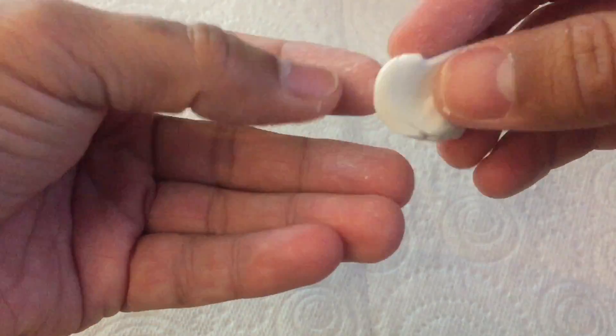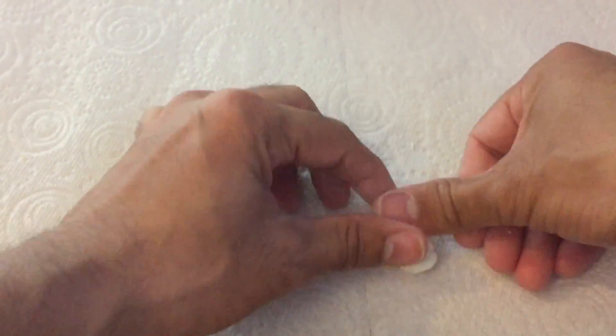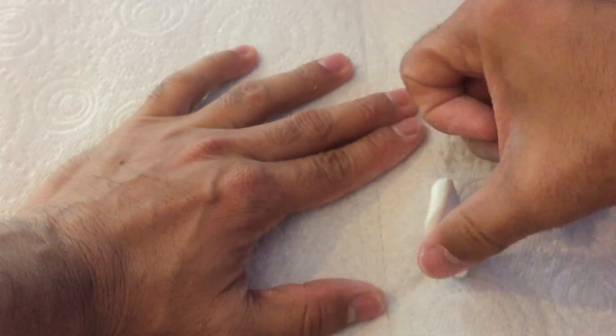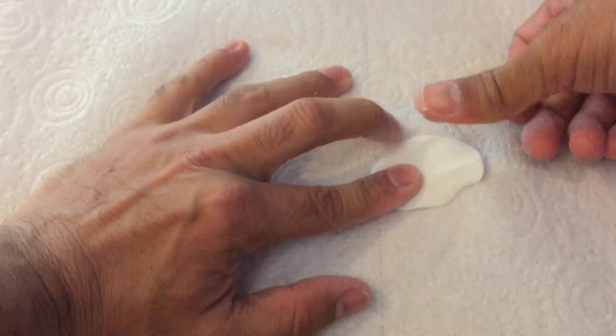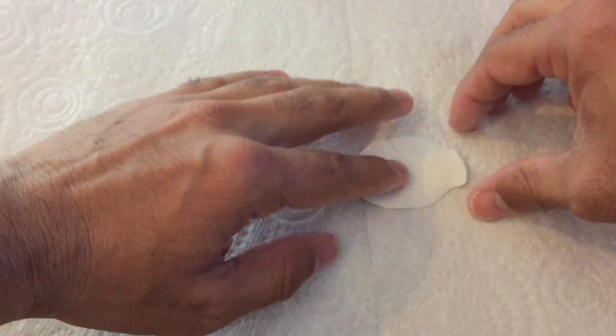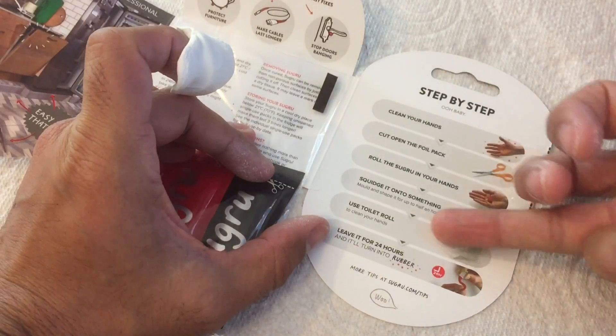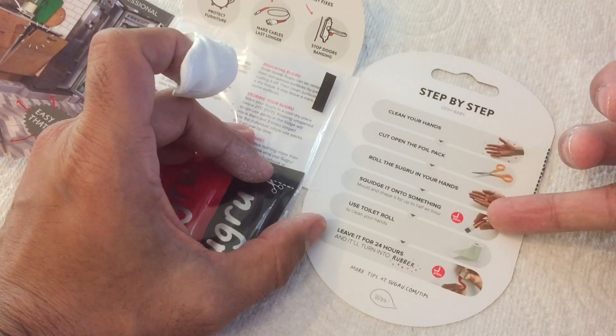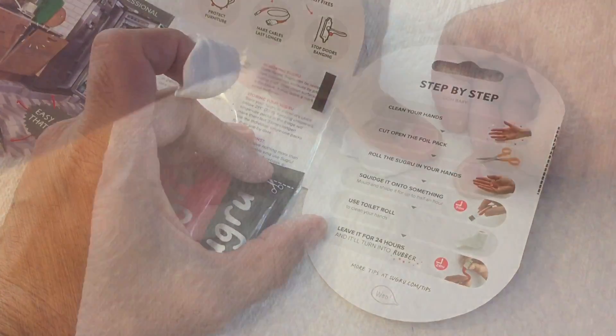Now notice it does tend to get everywhere. So I've used some tissue paper this time, one to keep it clean, two to stop it from going on the table below. In fact it says use toilet roll to clean your hands, so we're doing that already.